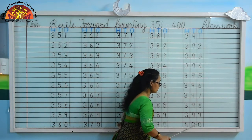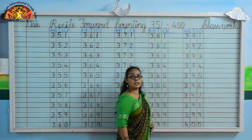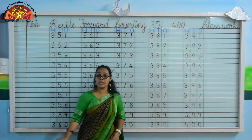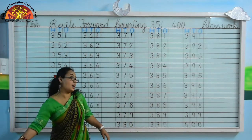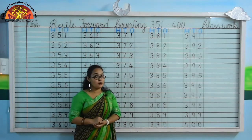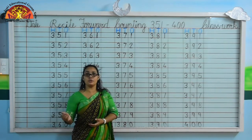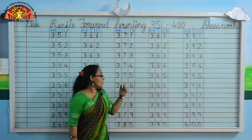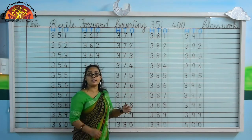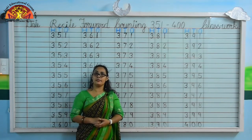Kids, learn to recite forward counting from 351 to 400 like this. Thank you, have a nice day.